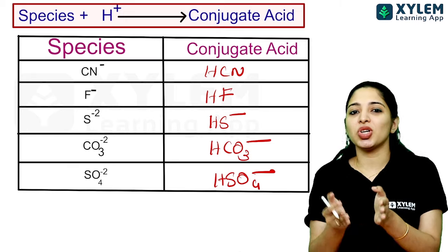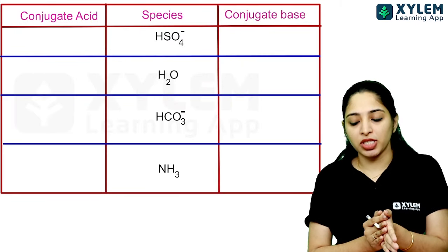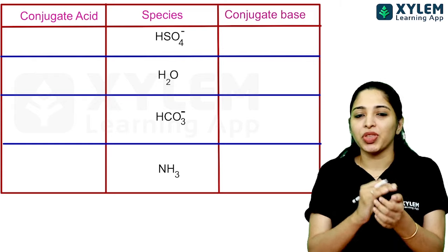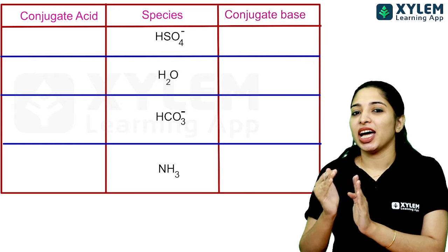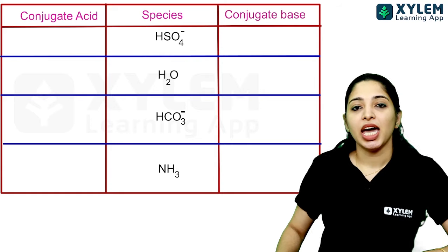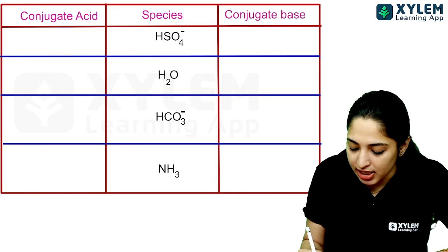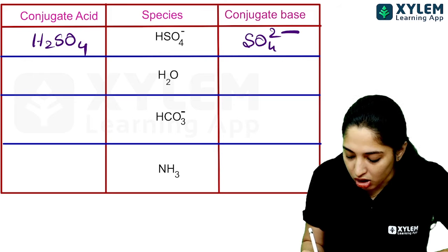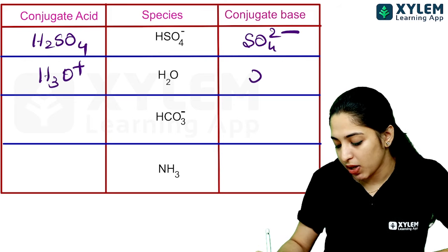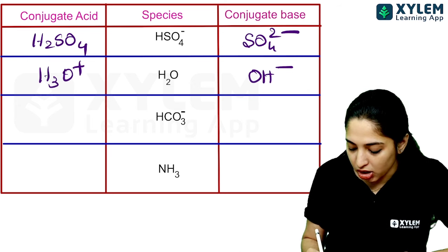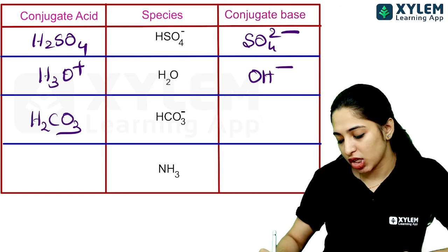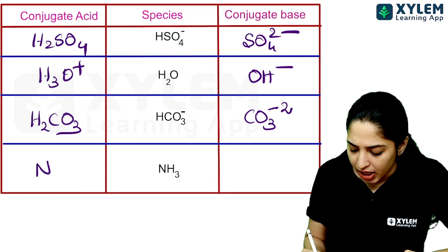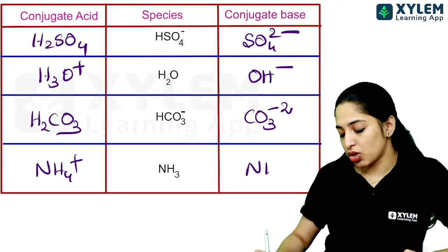We have conjugate acids and conjugate bases. Now let's look at more examples. H3O+ conjugate base is OH minus. HCO3 minus conjugate base is H2CO3, and its conjugate base is CO3 2 minus. NH3 conjugate base: if you remove H+, you get NH2 minus. NH4+ conjugate base is NH3.